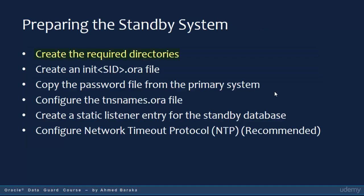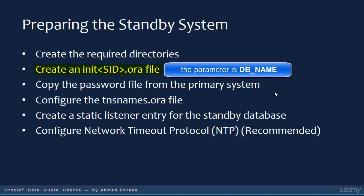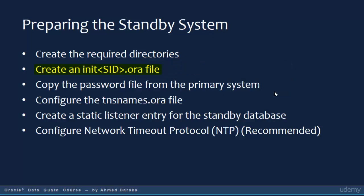On the standby system, you need to create any directories required by the database, such as directories for data files or trace files. You also need to create an init.sid.ora file containing only a single parameter — this file will be used by the standby only the first time you start up the instance; RMAN will create an SPFILE when you create the Data Guard. Copy the password file from the primary system.